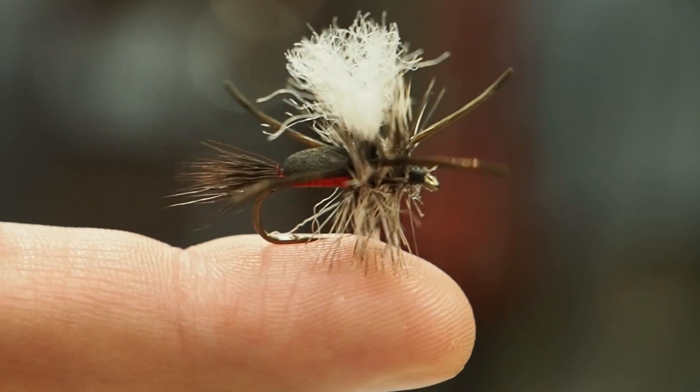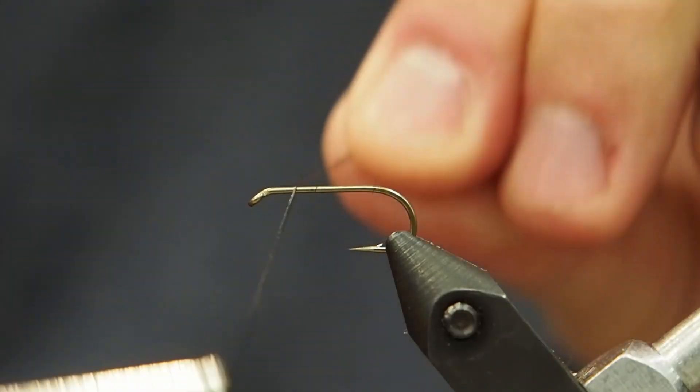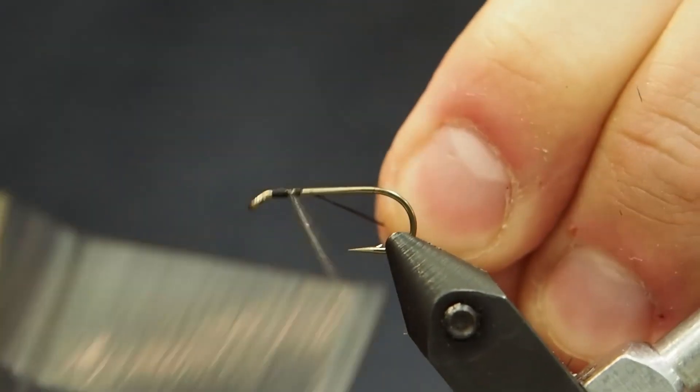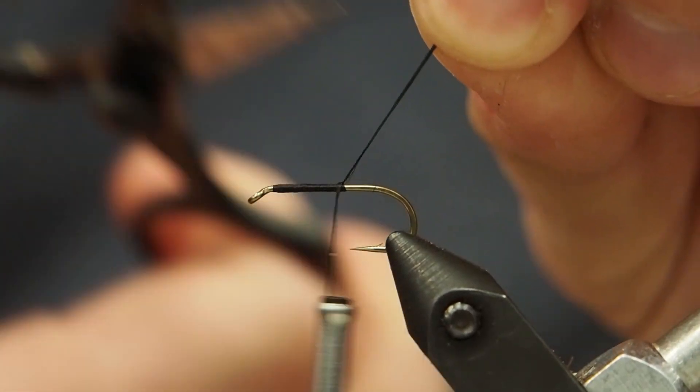Now normally this is tied in a more traditional way with deer hair folded over. We actually have a video on our fly tying channel if you want to see that more classic approach. We're going to start with a size 10 dry fly hook. We're just going to dress it completely and get ready to put on a tail here.